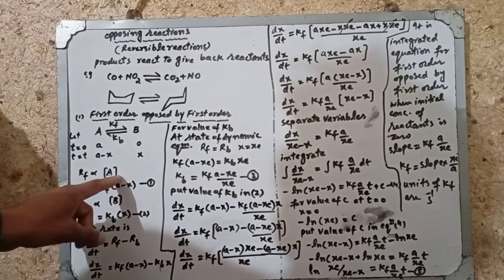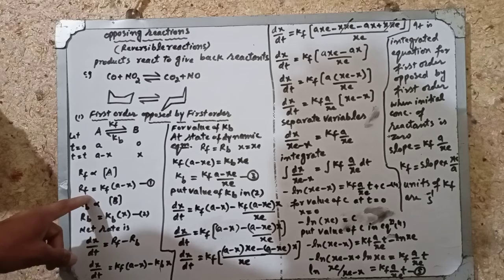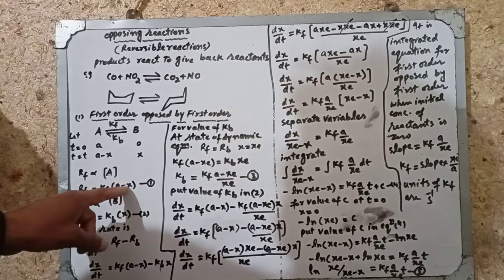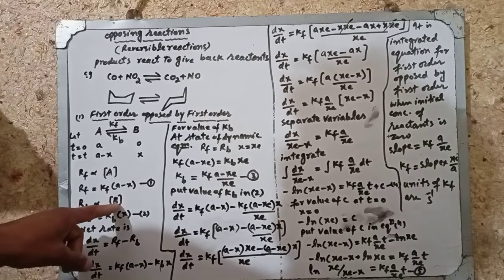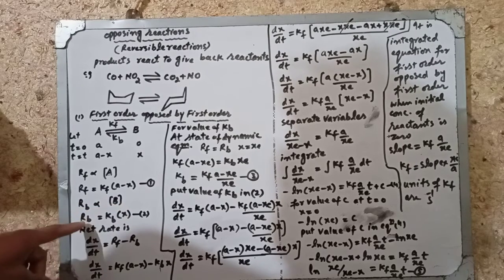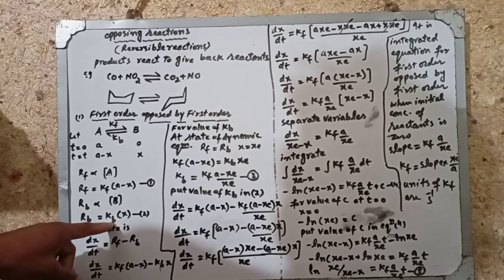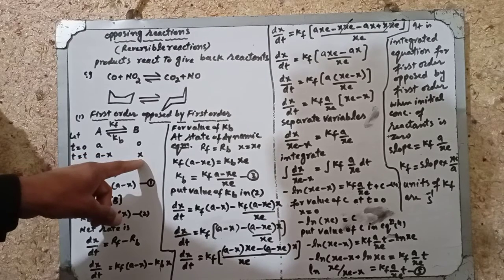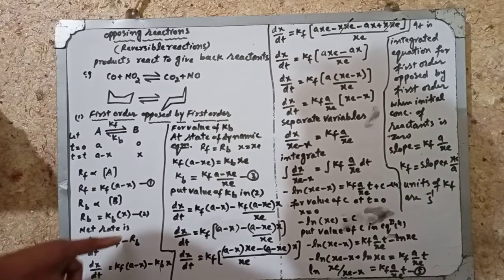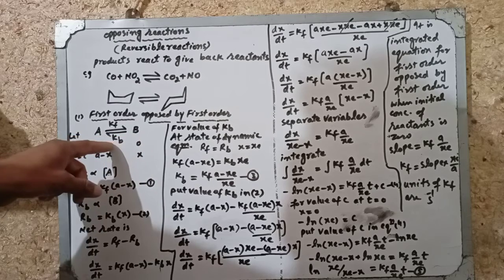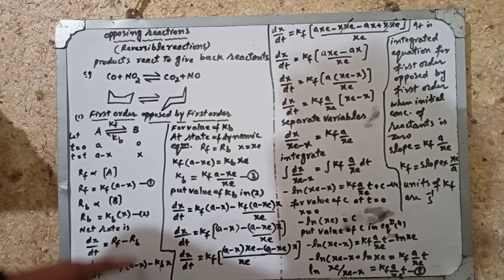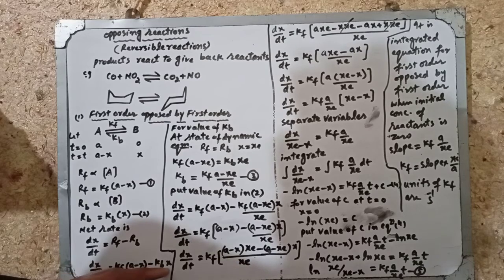The rate of the forward reaction is directly proportional to the concentration of reactant: RF equals kf into (a minus x), which is the concentration after time t. The rate of the backward reaction is directly proportional to the concentration of product B: RB equals kb into x, where x is the concentration of B after time t. The net rate is given as dx/dt equals rate of forward minus rate of backward, so dx/dt equals kf(a minus x) minus kb·x.